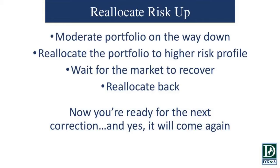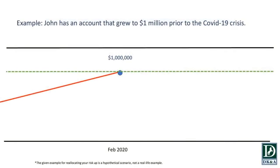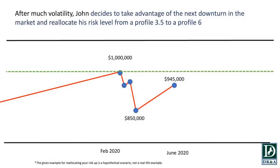Let's look at some numbers. We're going back to John. John has an account that grew to one million dollars prior to the COVID crisis — basically as of February 2020. The crisis comes, there's volatility, and his account goes down to 850,000 and has been coming back to 945,000.